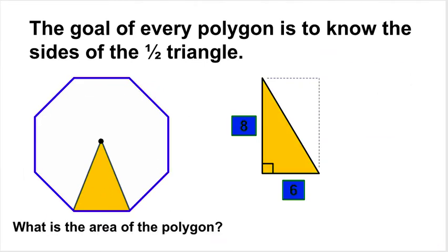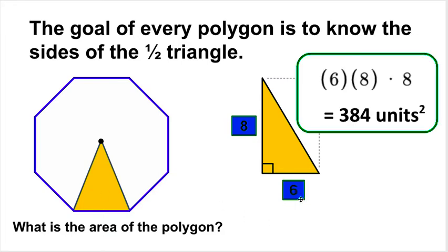Let's try another one. If I have a side length of 12, I chop it in half to get 6. Then I measure the height to be 8. The area of one wedge piece is 8 times 6, which equals 48. This is an octagon, so I multiply by 8. The total area of this polygon is 384 units squared.